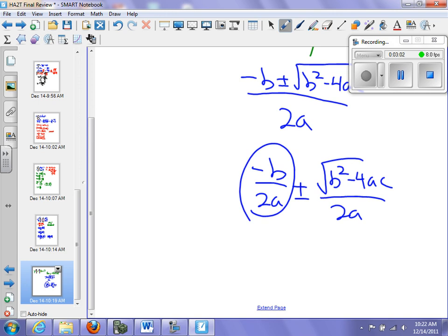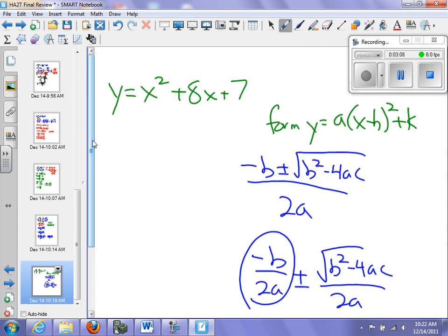This is an easy way to remember how to figure out the vertex. Just take your minus b part of it, put it over 2a, and there's your vertex. So let's find the vertex: it would be negative 8 over 2 times 1, so it's going to be equal to negative 4. That's my axis of symmetry.